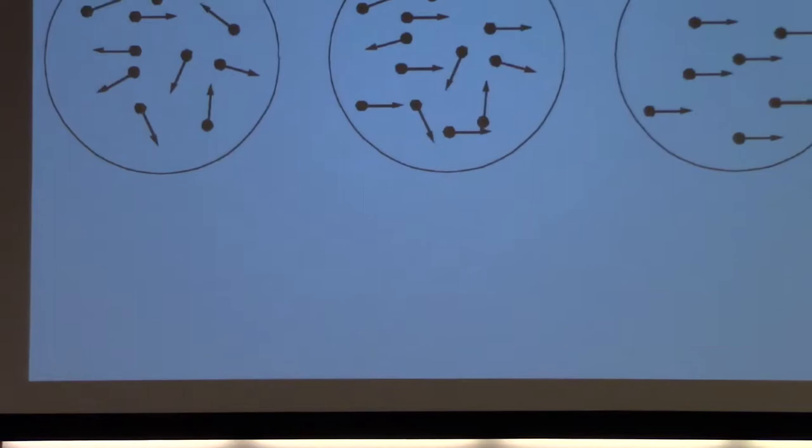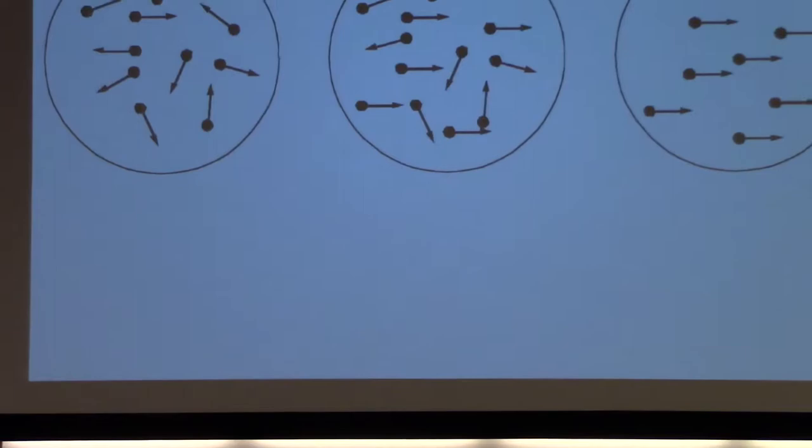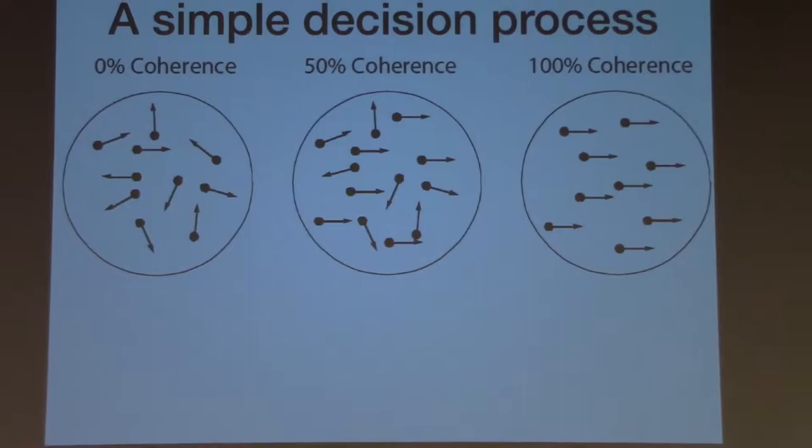Think about experiments like that. We have a bunch of dots in some area and they're moving. And we want you to estimate if they're moving left or if they're moving right. And what we can do is we can make it so that either all dots move into a random direction, in that case you can't tell me if they're moving left or right. Or we could make it so that half of them are just going straight and the other half are moving into random directions.